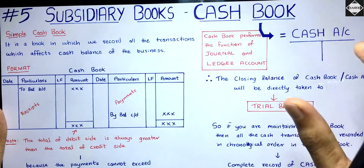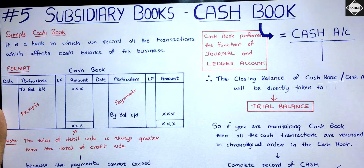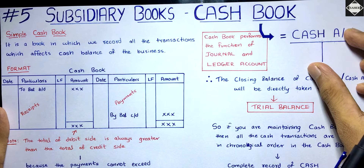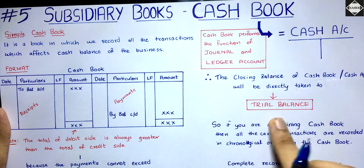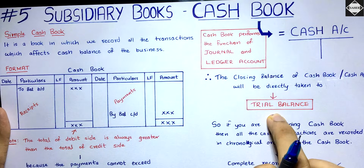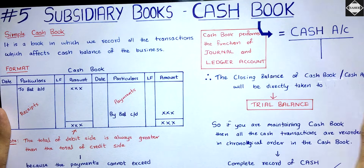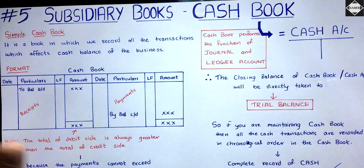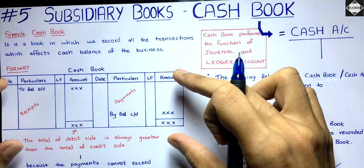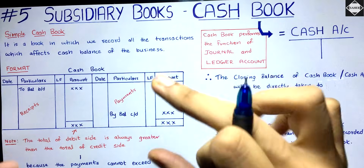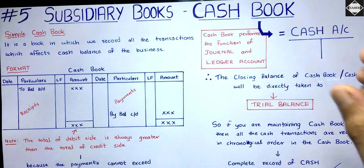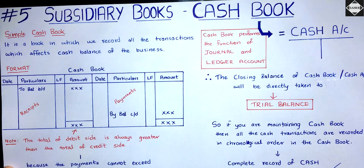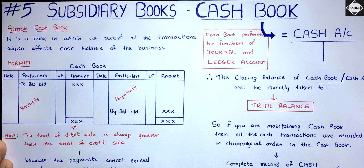Just like in the ledger accounts, the opening balance is on the debit side and the closing balance on the credit side. The closing balance of the cashbook will be directly taken to the trial balance. There is no journal entry involved — unlike the purchase book or sales book format. The balance goes directly to the trial balance, same as a ledger account.